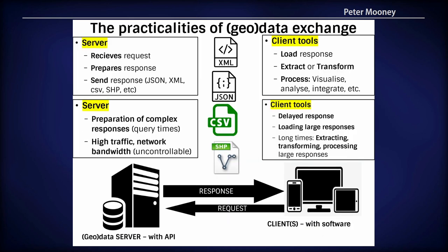Most of us attending a FOSS4G conference will have some understanding about the practicalities of geodata exchange or data exchange in general. We have servers on one side and client tools on the other. Servers are there to respond to requests, and it can sometimes be a very complex job, because they might have high traffic and network bandwidth issues which are uncontrollable sometimes.